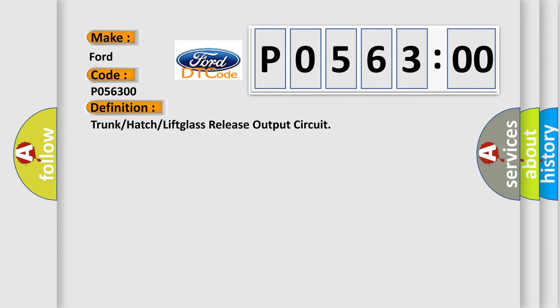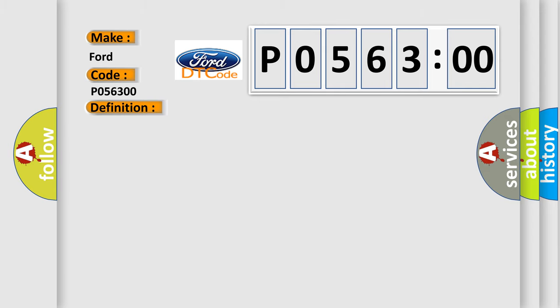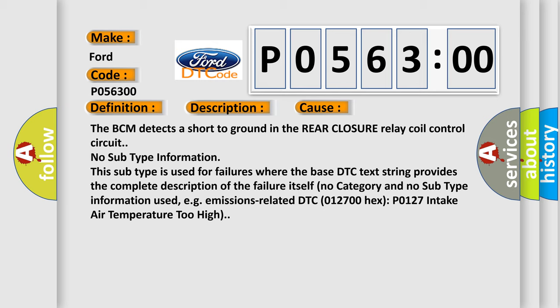The basic definition is: Trunk or hatch or lift glass release output circuit. The system voltage is 9 to 16 volts when the relay is being actively commanded by the BCM. This diagnostic error occurs most often when the BCM detects a short to ground in the rear closure relay coil control circuit. No subtype information is used — this subtype is used for failures where the base DTC text string provides the complete description of the failure itself, e.g., emissions-related DTC 012700 or P0127 intake air temperature too high.